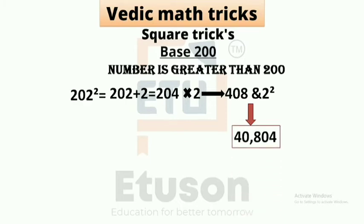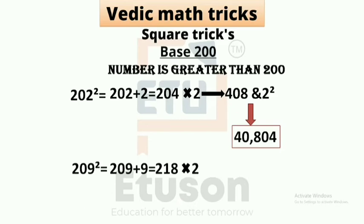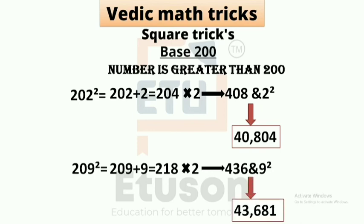Let's take another example: 209 squared. 209 is how much greater than 200? It is greater by 9. So we add 9 to the number: 209 + 9 = 218. Then multiply by 2, because our base is 200: 218 × 2 = 436. And square the excess number 9: 9² = 81. So the answer is 43,681.